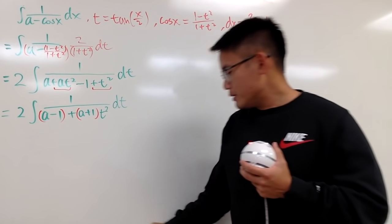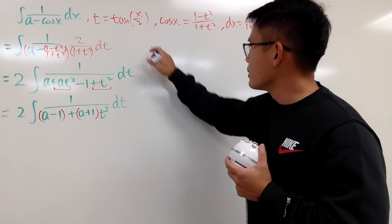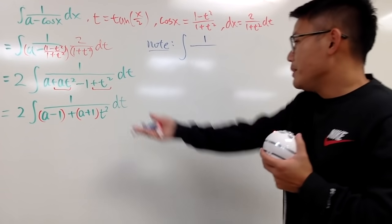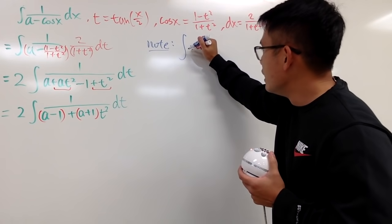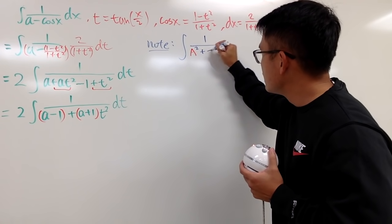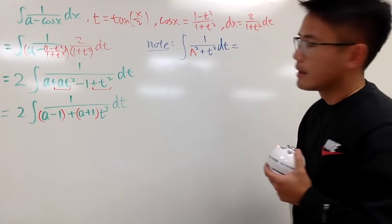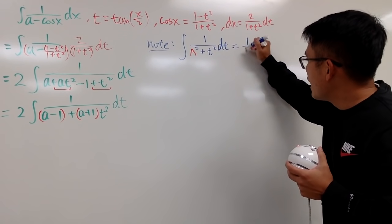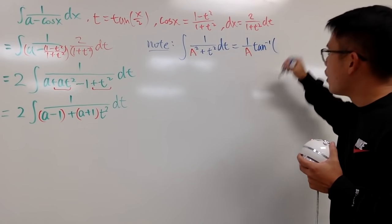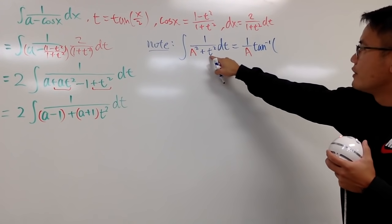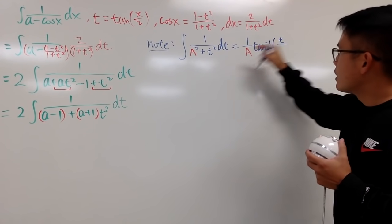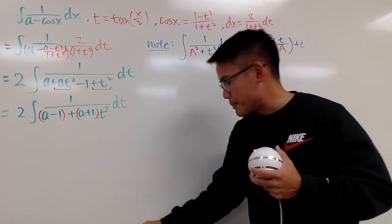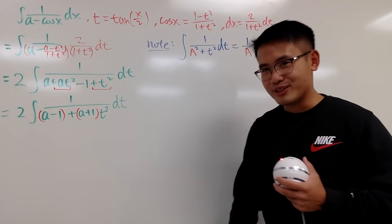Let me note the relevant formula: if you integrate 1 over (A + t²) dt, the result is (1/√A) · arctan(t/√A) plus C. I have a video on this formula — go check it out if you need to.